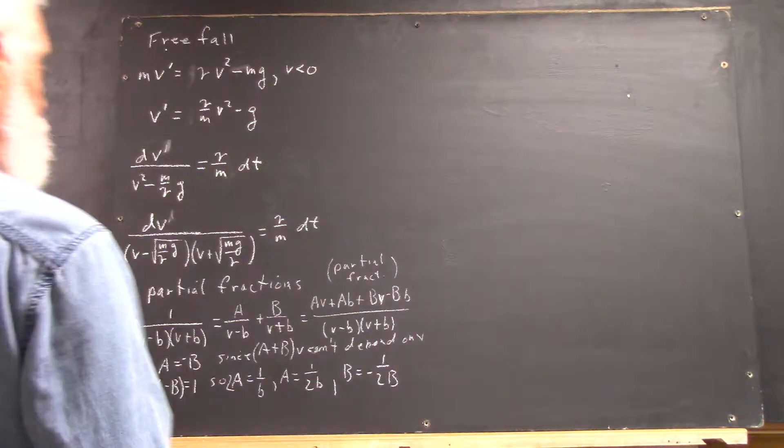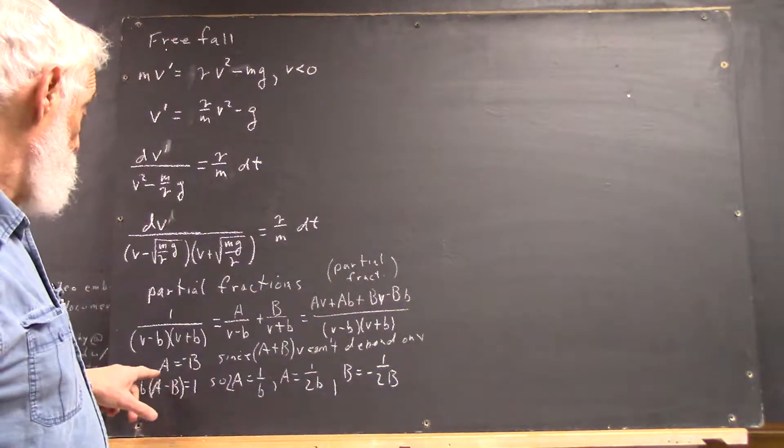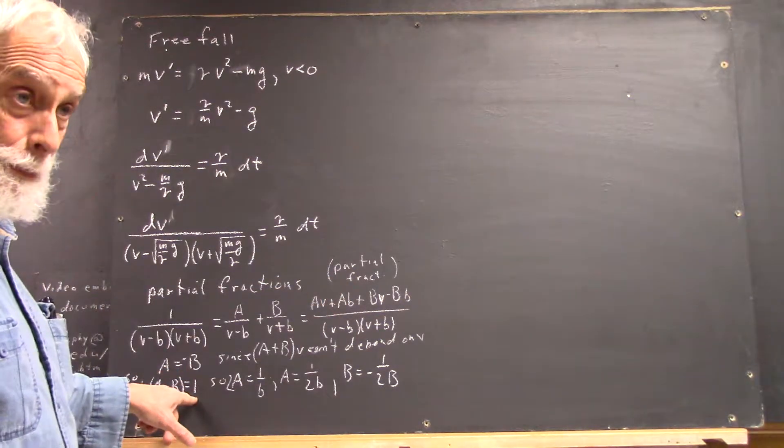So, we need a little explanation of partial fractions, right, to understand why A has to equal negative B, and especially where this 1 comes from.